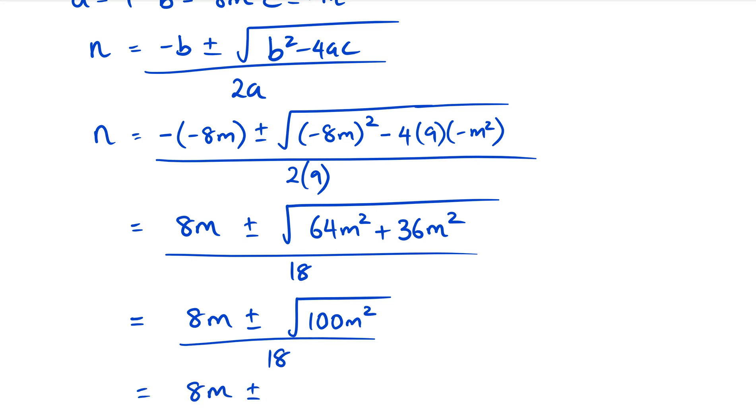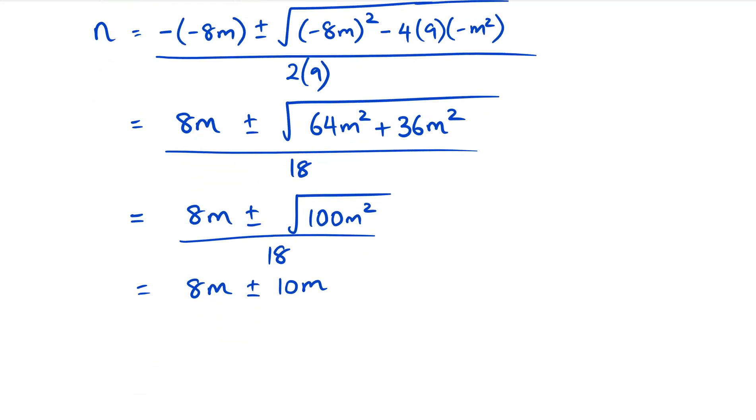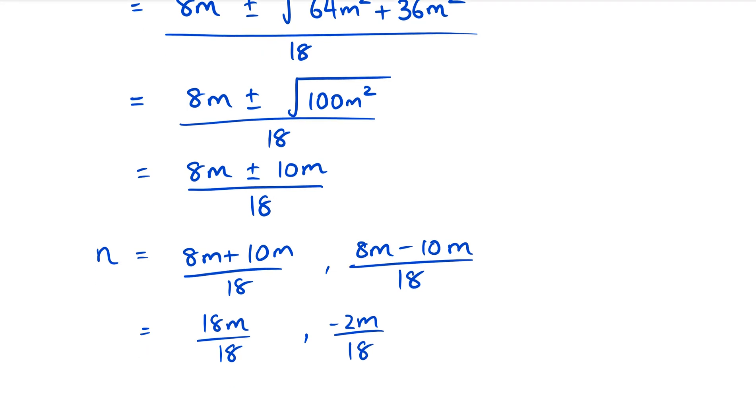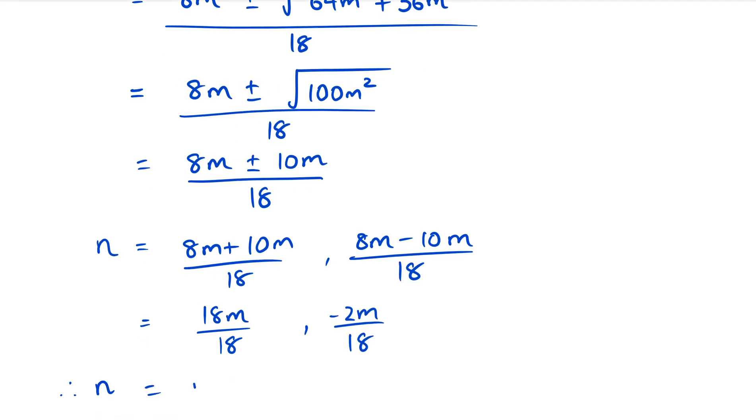We keep going: 8m plus or minus square root of 100m² divided by 18. Plus or minus - now square root of 100m² is 10m - over 18. So we've actually got two answers for n: 8m plus 10m over 18, or 8m minus 10m over 18. So our two answers are 18m over 18 or negative 2m over 18.